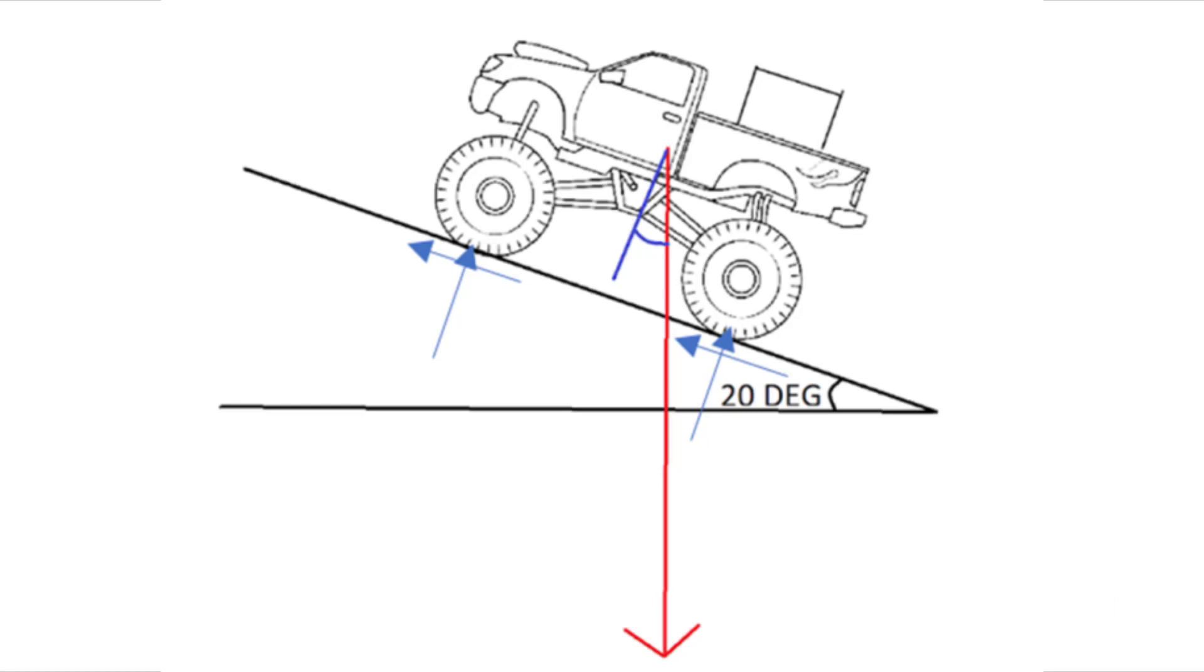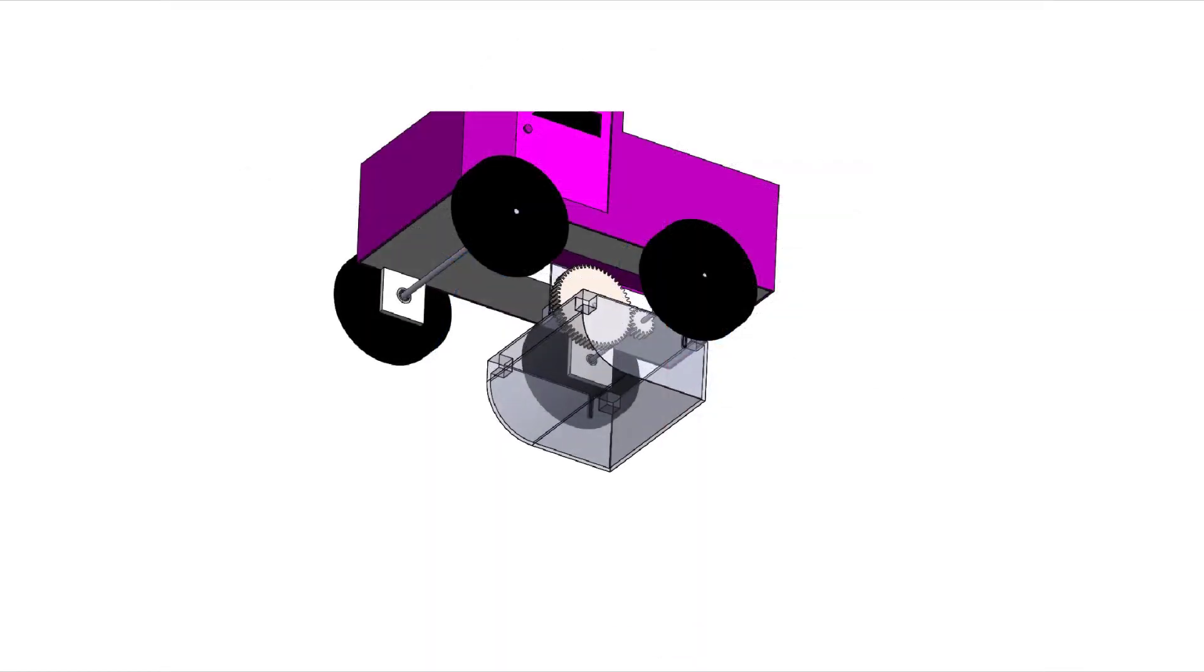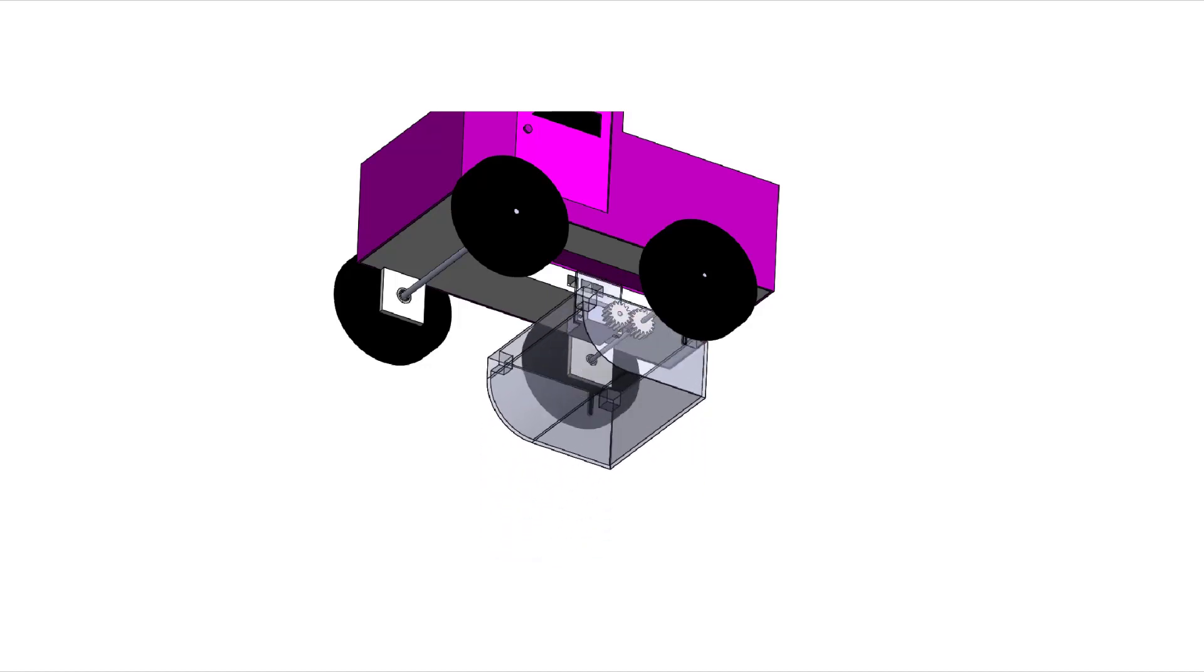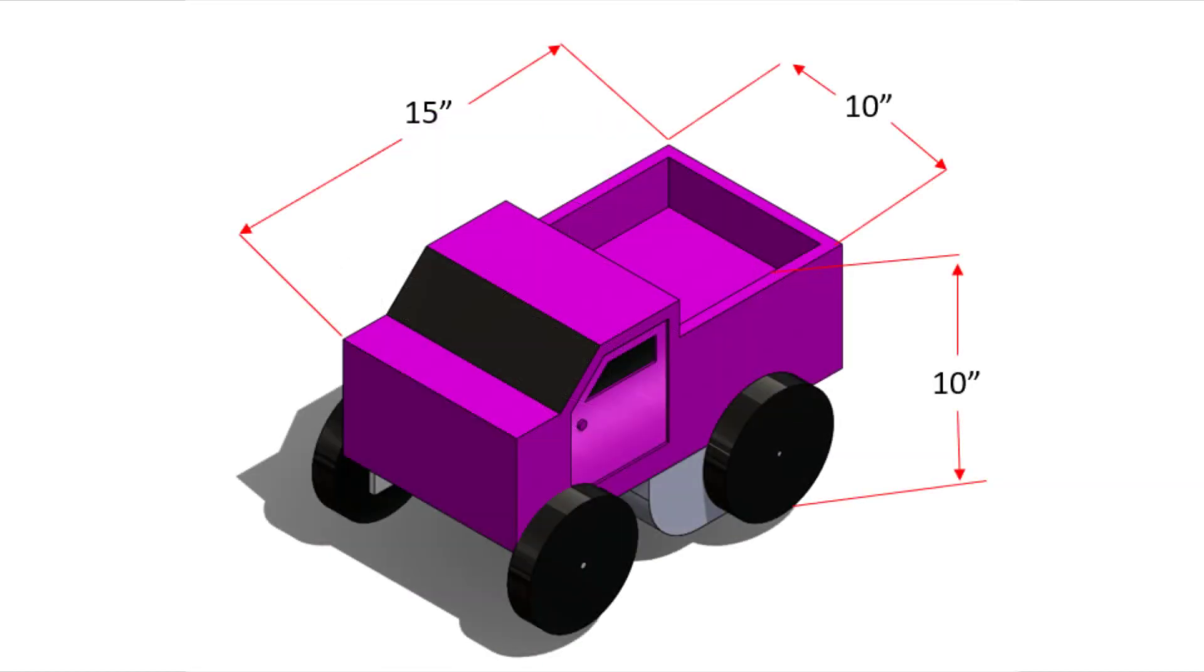By intent, the truck would be unable to climb a 20-degree slope in the highest gear ratio with the bed fully loaded. The gears must be swapped to the lowest configuration for the added torque in order for the truck to reach the top of the ramp. The estimated weight is 10 pounds, and the final dimensions are 15 inches long, 10 inches tall, and 10 inches wide.